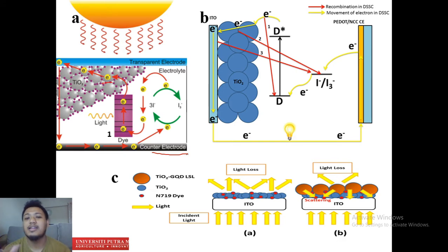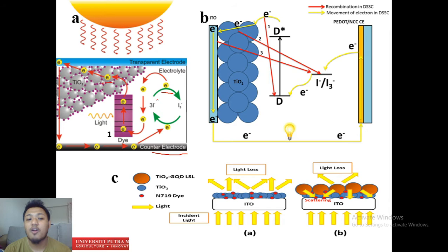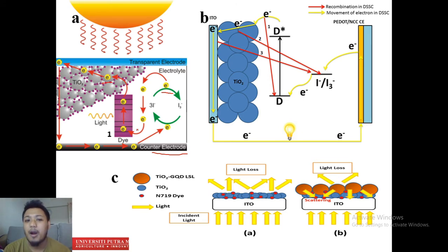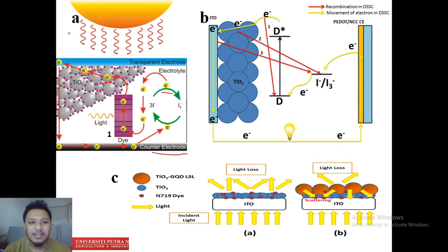The counter electrode acts as a catalyst enabling the electron to recombine back with the electrolyte. The electrolyte is a redox type undergoing oxidation and reduction — oxidation of iodide to triiodide releases an electron, which goes back to the dye and completes the process. Throughout the DSSC process, new power is generated because we have current from moving electrons and voltage from the electron-hole junction.